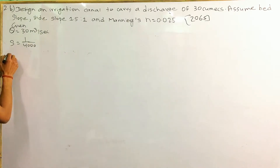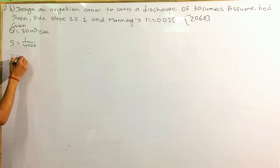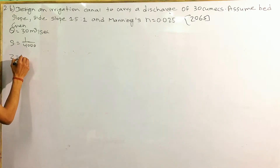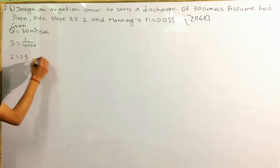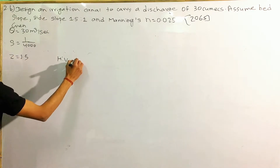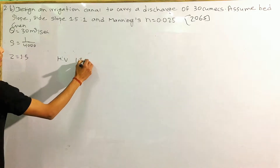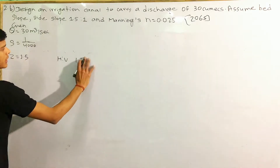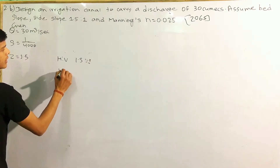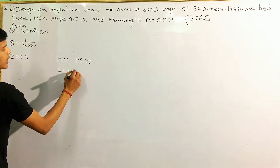We can find the side slope z. That means z cannot be 1.5 — so z is equal to 1.5, and minus 1.5 squared is equal to 1.